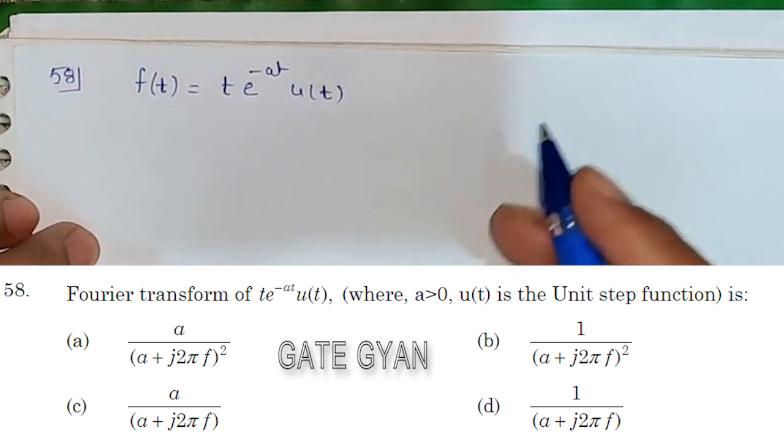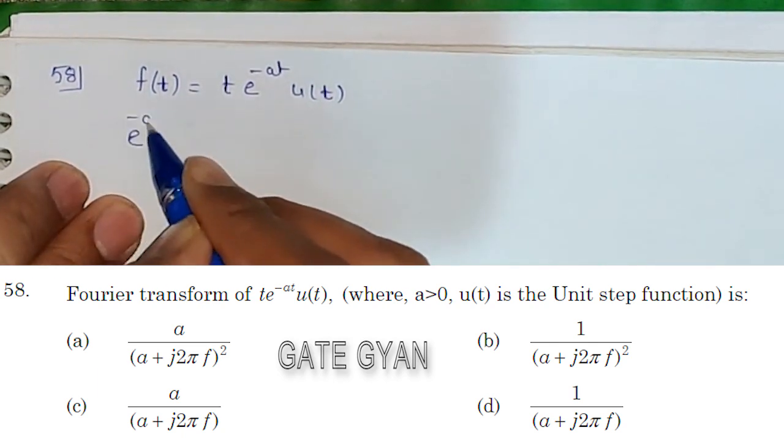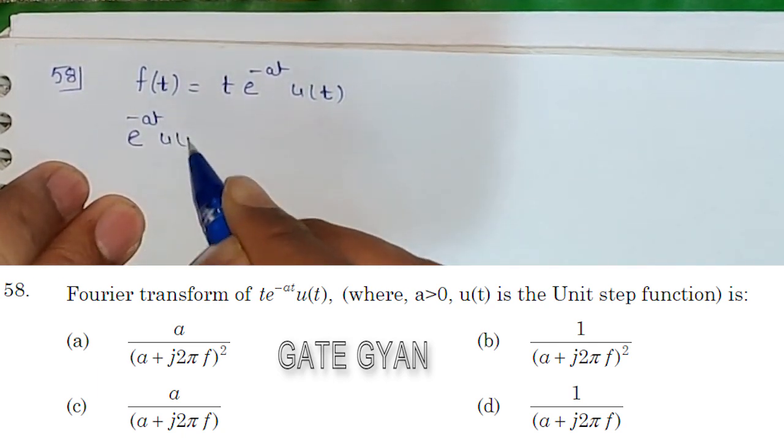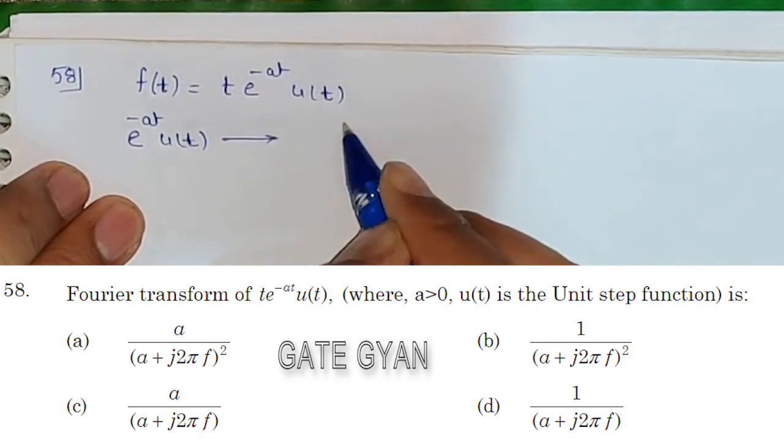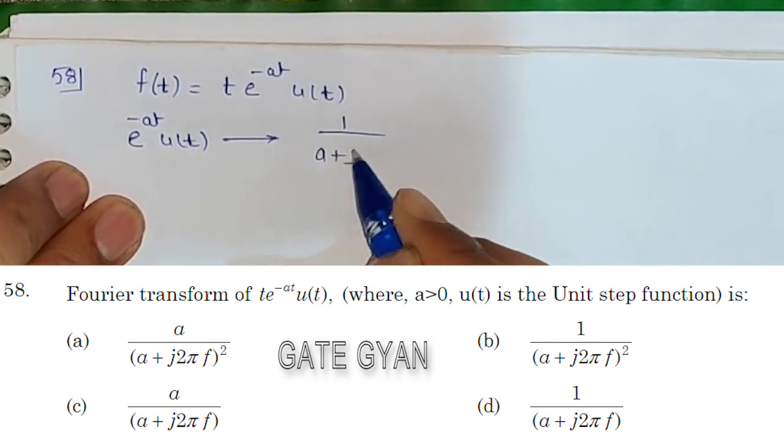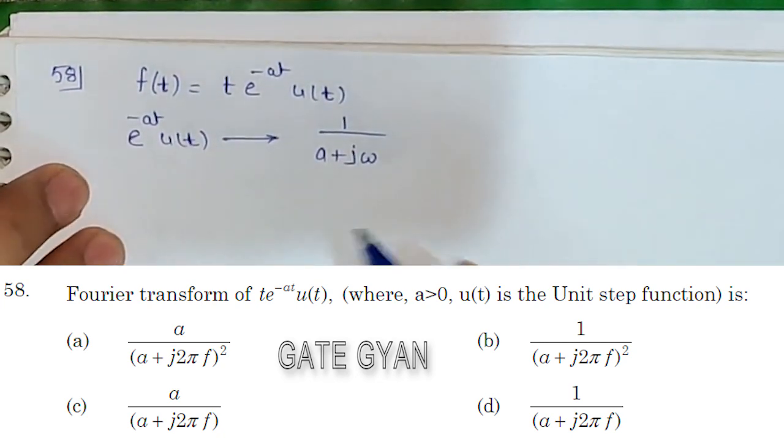We need to find the Fourier transform. First, let's find the Fourier transform of e^(-at)·u(t), which is given as 1/(a + jω).